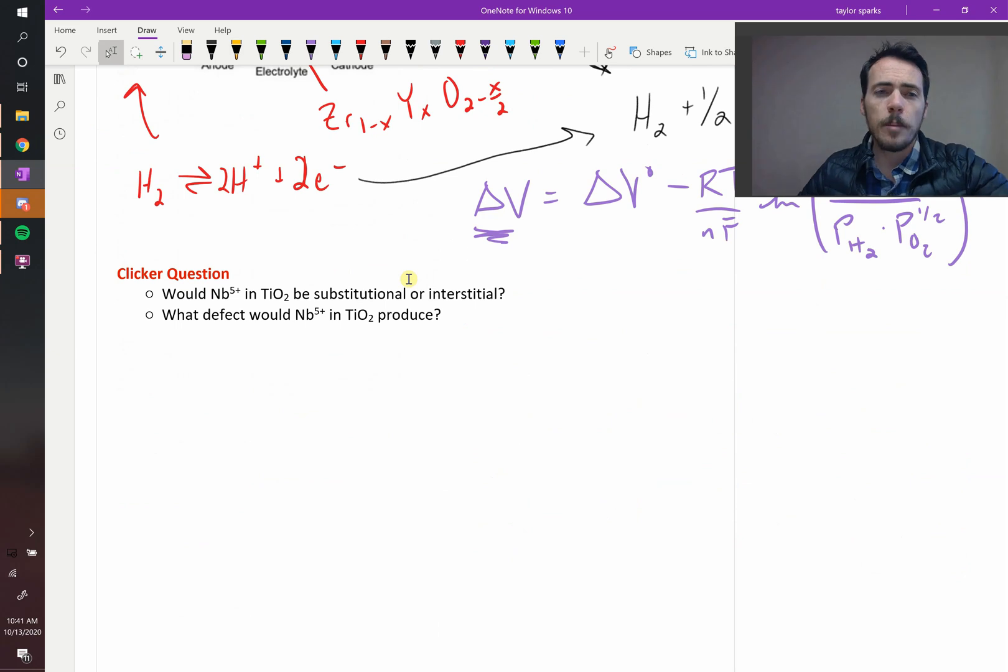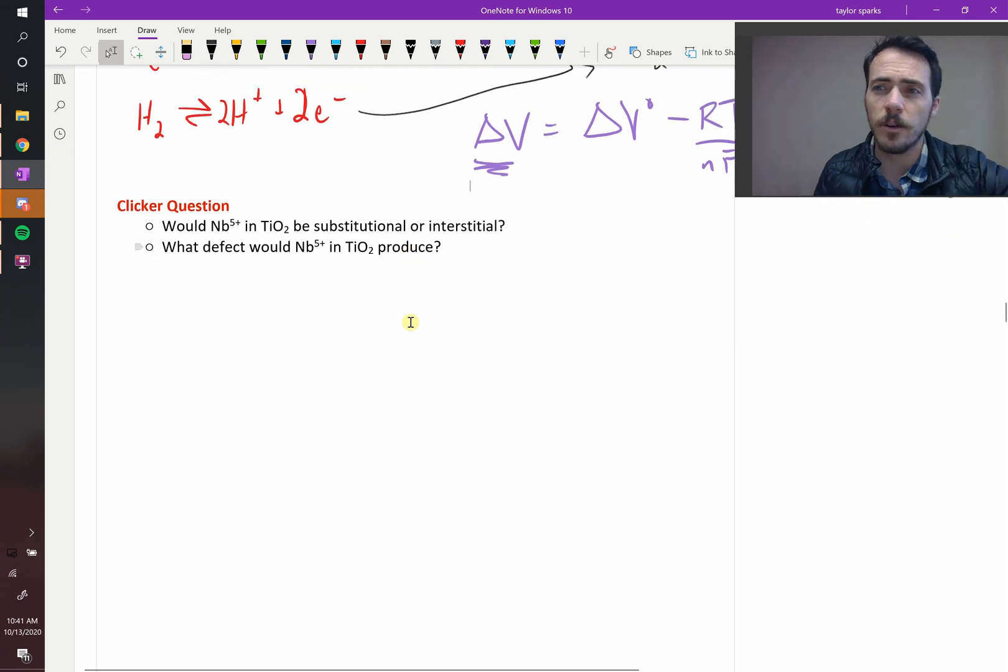Let's look at this one. What happens if you have niobium 5 plus ions, and you're going to put them in a titanium oxide lattice? So first off, would it be substitutional or interstitial? Well, niobium 5 plus is a high charge, so it might be a small ion, but if you look it up, it's actually relatively large still, and so it's about the size of titanium, so it's probably going to be substitutional. So it's going to substitute out a titanium. So what type of defect will it form?